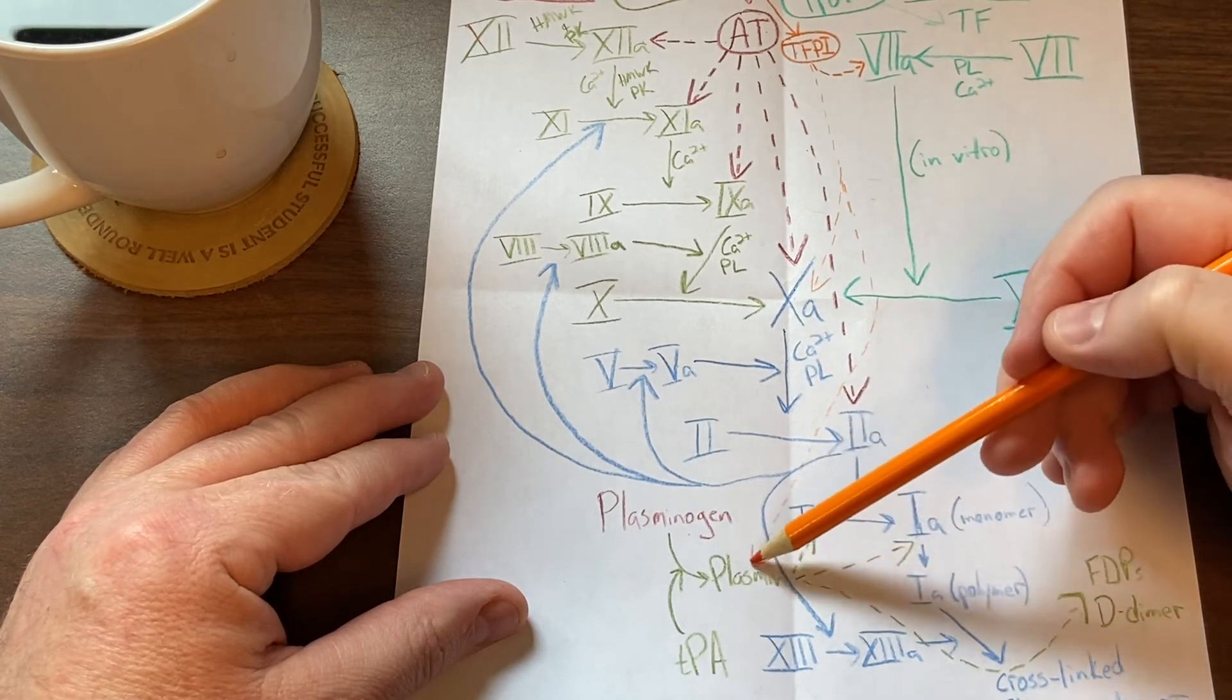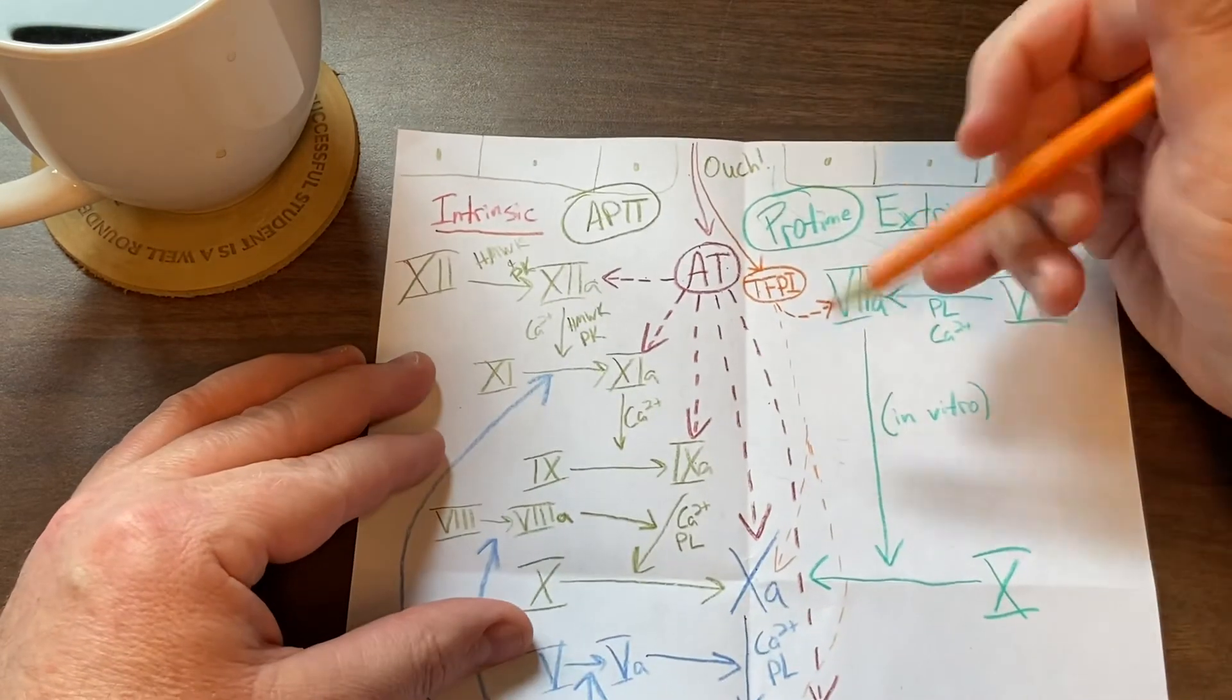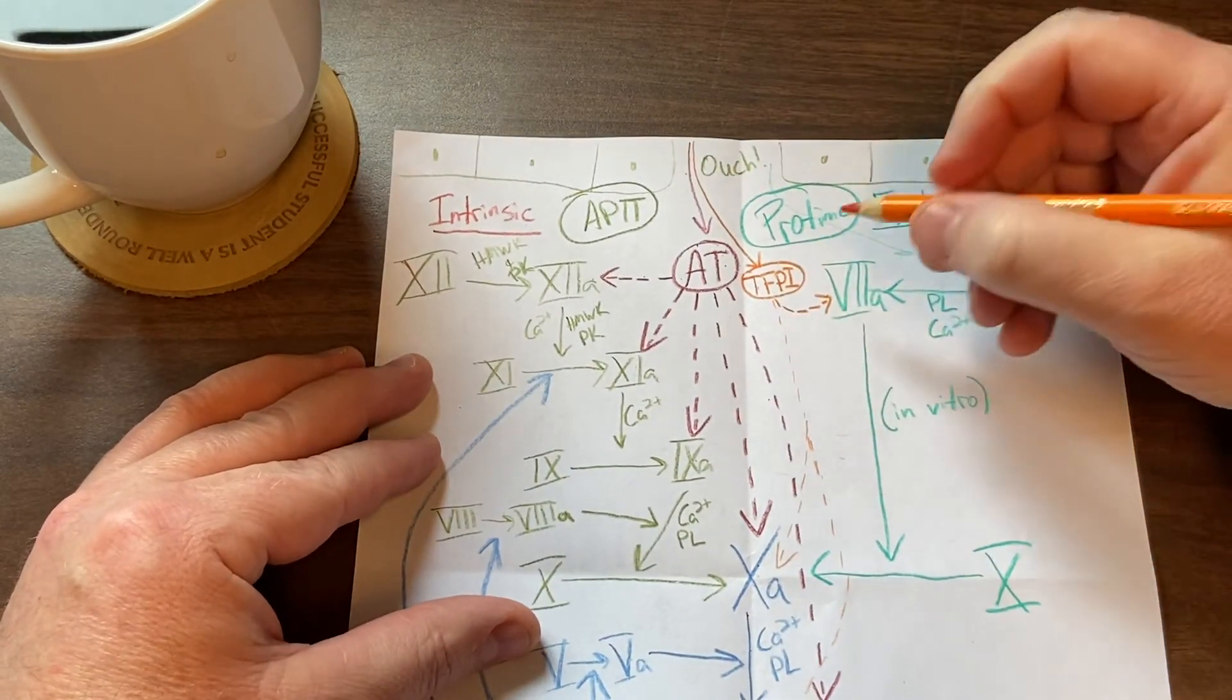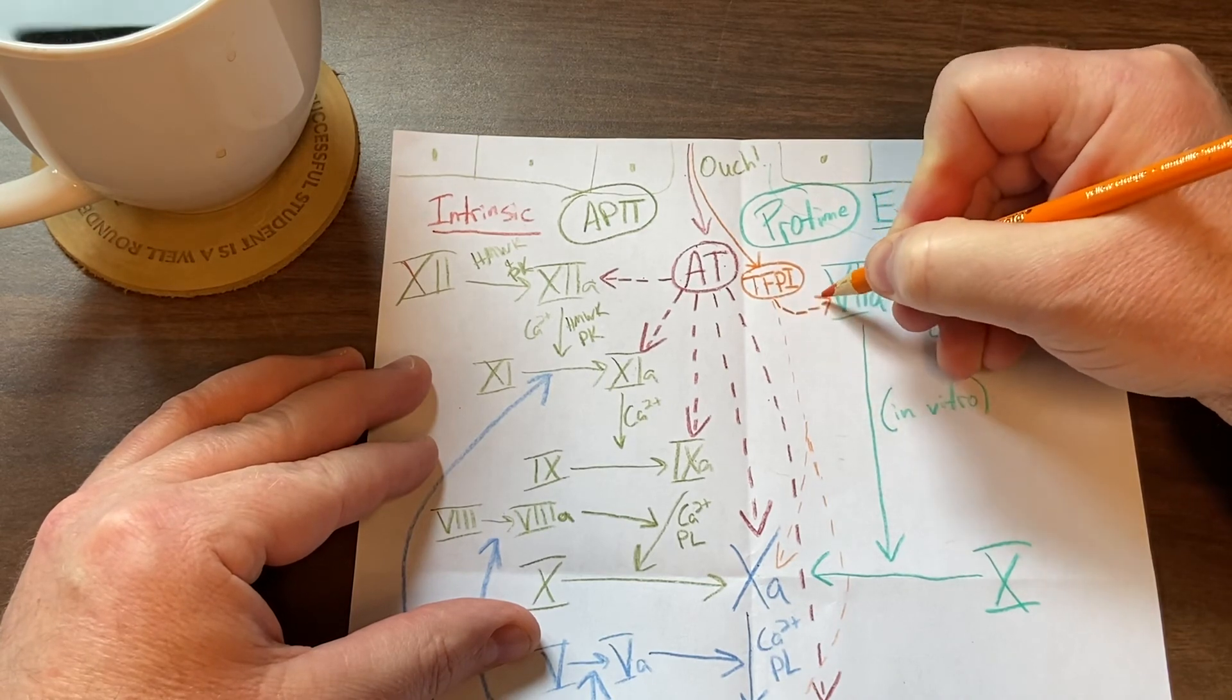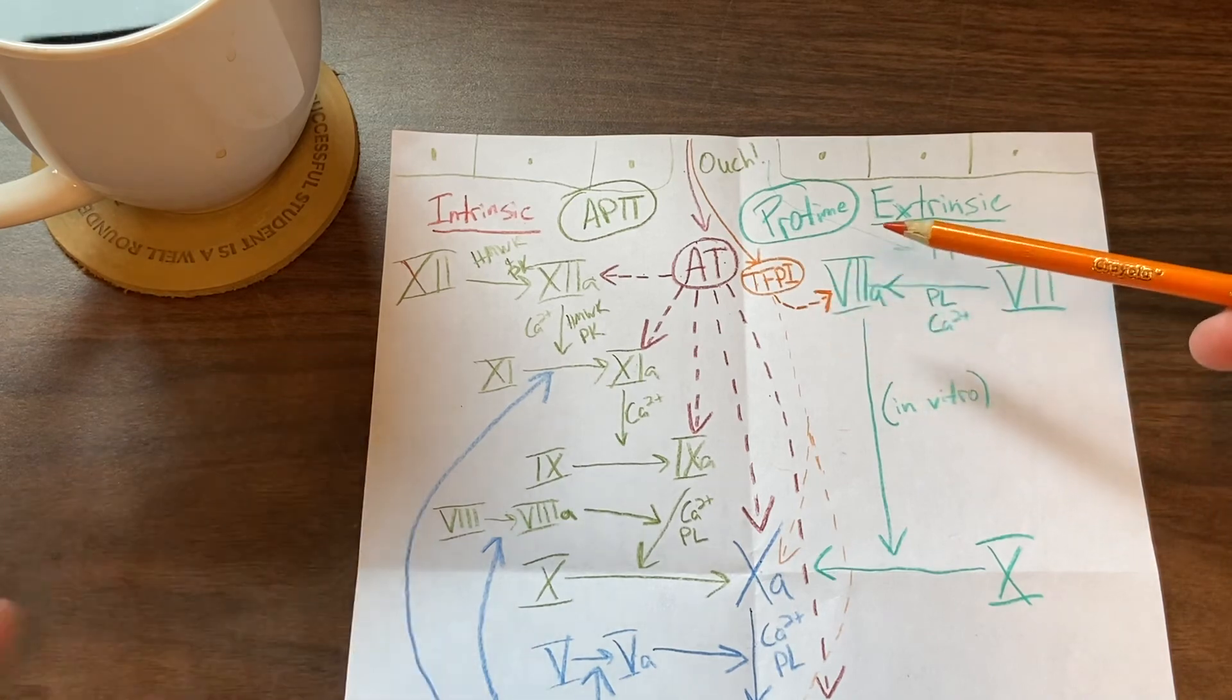And you can see that there. Otherwise, the main effect with tissue factor pathway inhibitor is to inhibit the tissue factor pathway, which is factor 7, so I drew a little bit darker there for you.